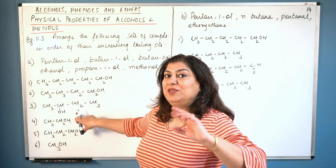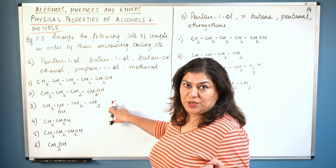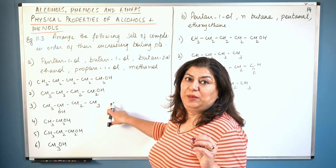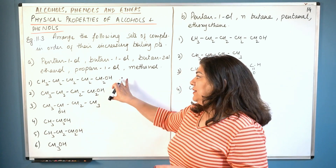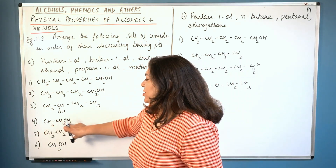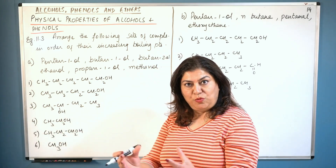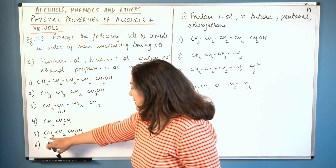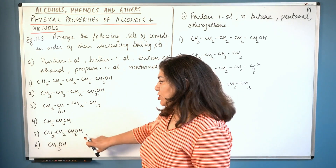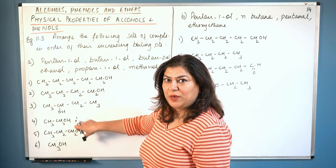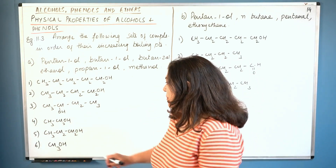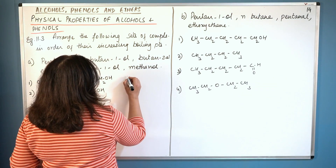Butan-2-ol has the same four carbons but the OH is on the second carbon, so it is branched. The more the branching, the more spherical the molecule, therefore it has a lesser boiling point than butan-1-ol. Ethanol has only two carbon atoms — a much smaller molecule, so its boiling point is obviously less than all the butanols. Propan-1-ol has three carbons, so its boiling point is more than ethanol but less than the butanols. Methanol is the smallest, so it has the lowest boiling point.